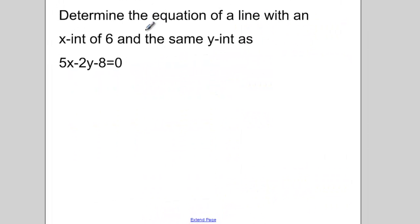Last problem for this video. Determine the equation of a line with an x intercept of 6 and the same y intercept as my standard form equation 5x minus 2y minus 8 equals 0. So we need to do a little bit of decoding. What we're looking for are two points. We'll call it point 1 and point 2.